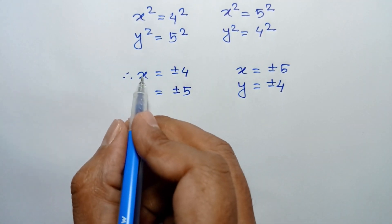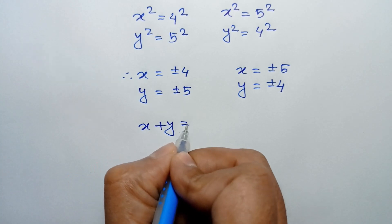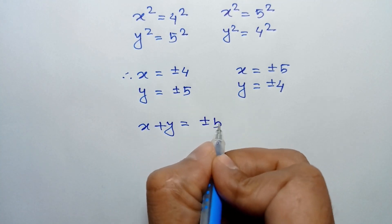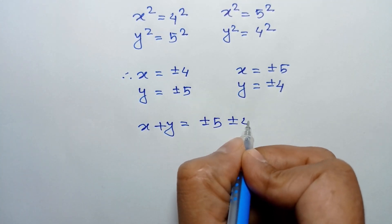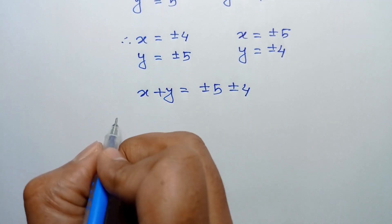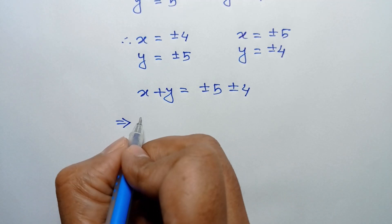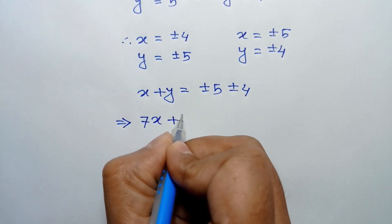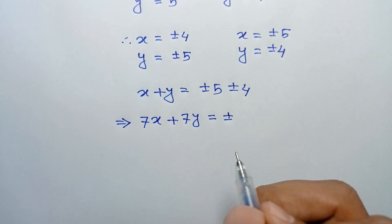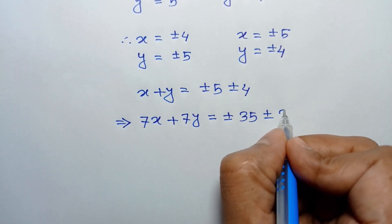Adding x and y, we get x plus y equals plus or minus 5 plus or minus 4 for both cases. Multiplying both sides by 7, we have 7x plus 7y equals plus or minus 35 plus or minus 28.